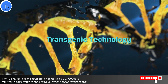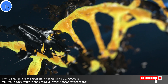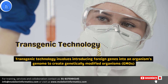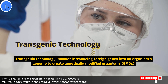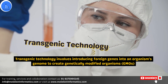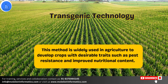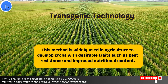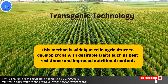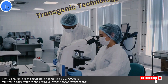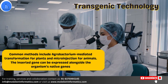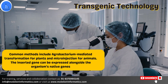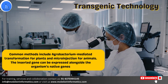Another significant technique is transgenic technology. Transgenic technology involves introducing a foreign gene into an organism's genome to create a genetically modified organism. This method is widely used in agriculture to develop crops with desirable traits such as pest resistance and improved nutritional content. Common methods include Agrobacterium-mediated transformation for plants and microinjection for animals. The inserted gene can be expressed alongside the organism's native genes.